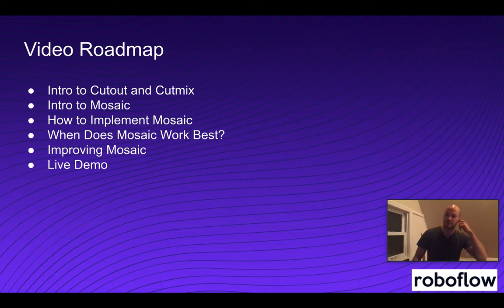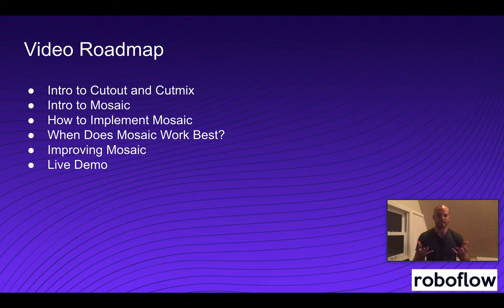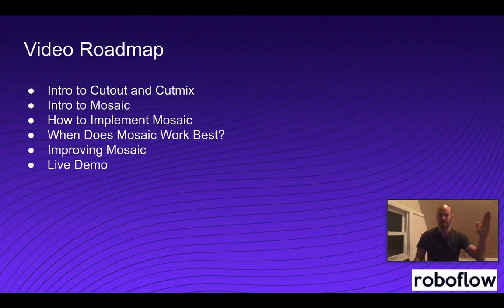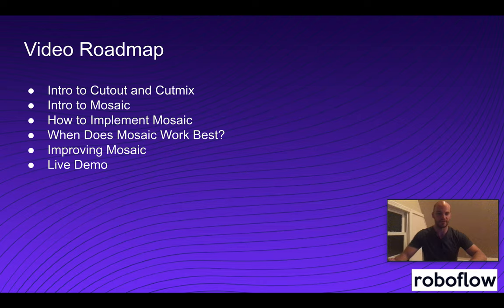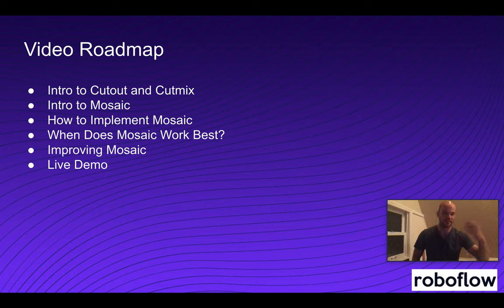Here's a roadmap of the video we're going through today. First, we'll talk about mosaic augmentation predecessors: cutout and CutMix. After that, we'll cover the nuts and bolts of what mosaic data augmentation is, then how to implement it in code — from theory all the way through actual implementation. Then we'll talk about when mosaic might work best or not work well, how we could improve mosaic going forward, and finally a live demo where we'll implement mosaic on a live dataset and see it transform our images.